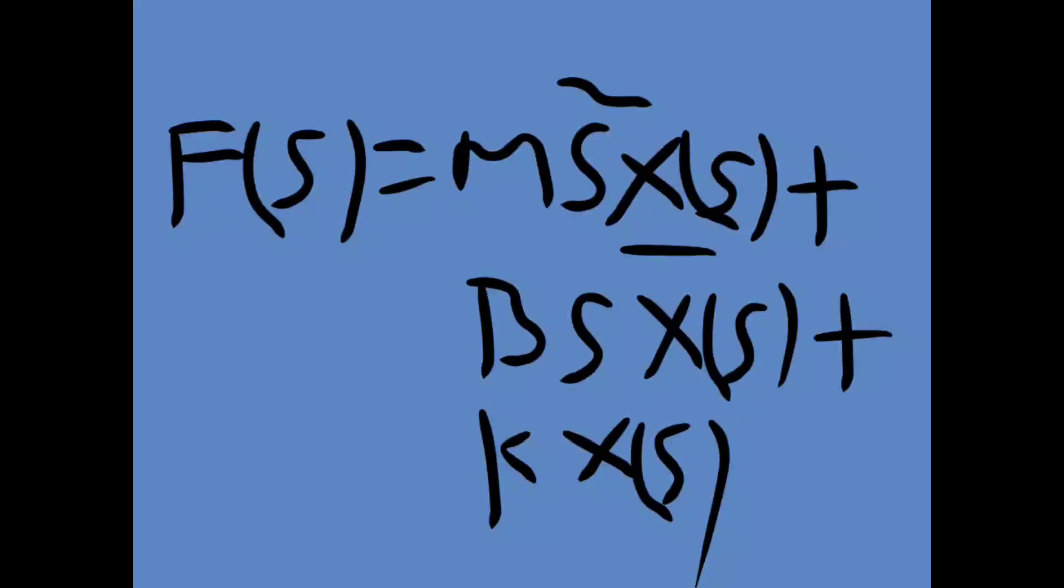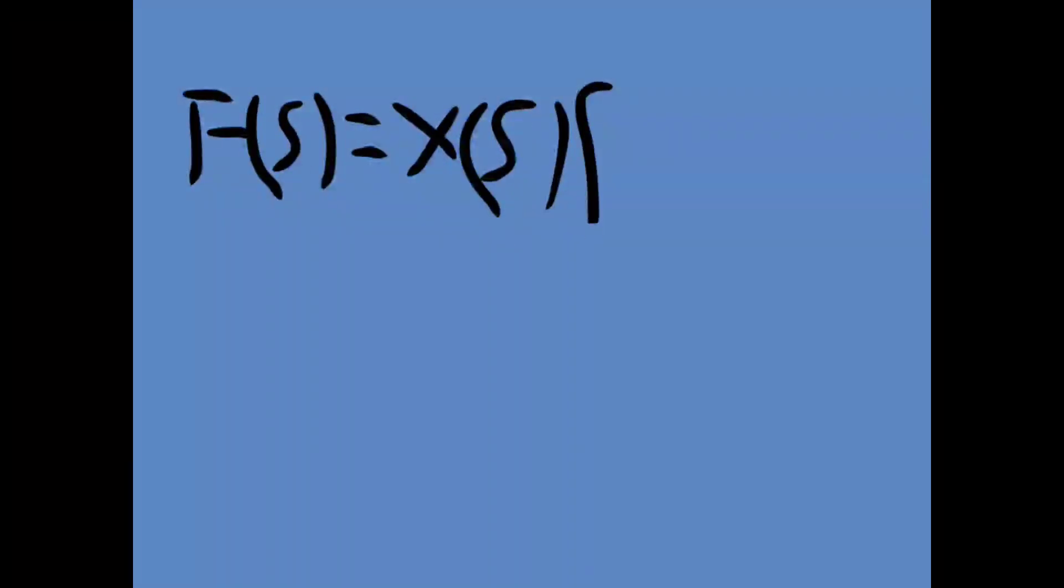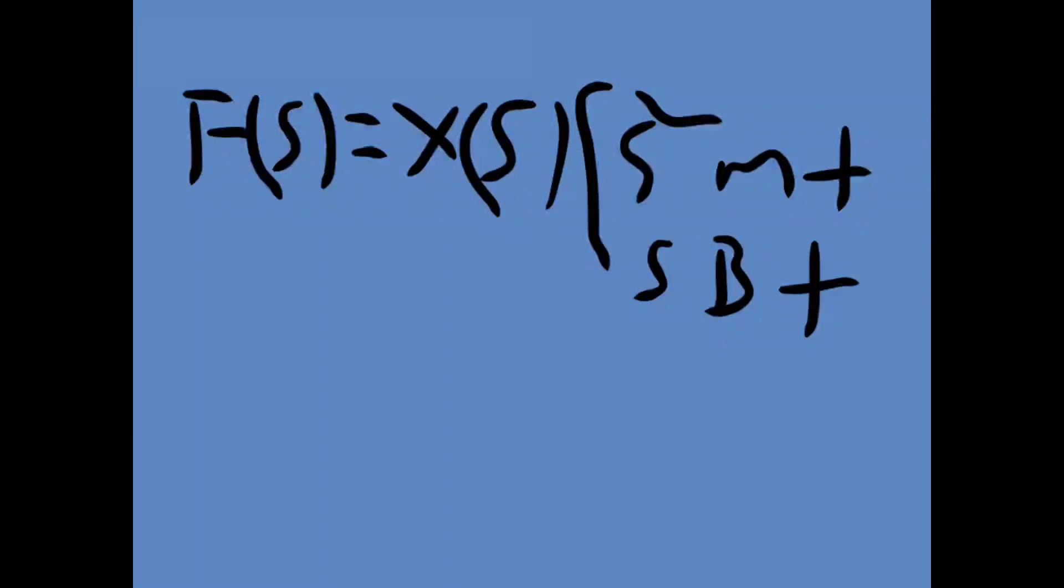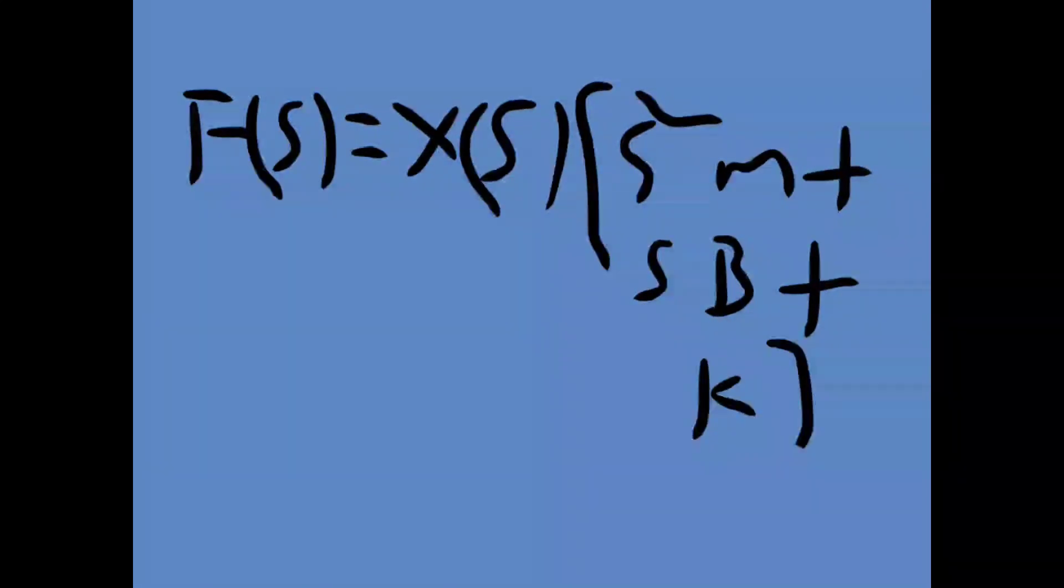So now we have X(s), X(s), X(s) common. We need to find the transfer function, output X(s) by F(s). So now we take X(s) common, X(s) into Ms² plus Bs plus K.